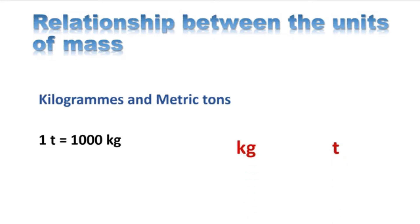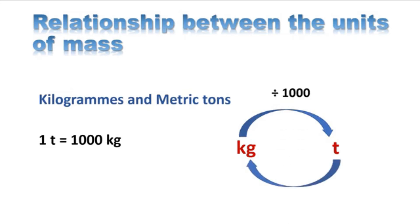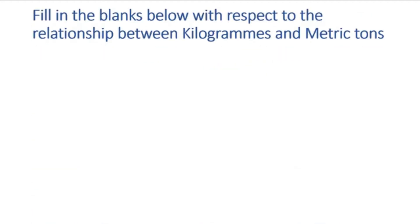If you need to convert kilograms to tons, you have to divide by one thousand. Whereas if you need to convert tons to kilograms, you must multiply the value by one thousand. So it is very simple — this is all about multiplication and division. Now let us do an activity: fill in the blanks with respect to the relationship between kilograms and metric tons.